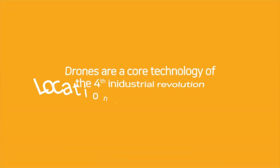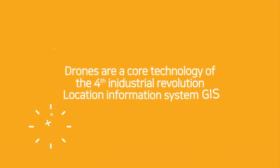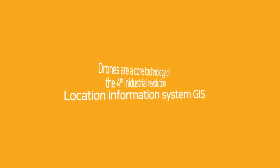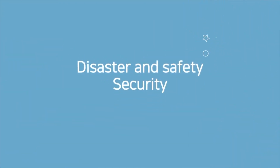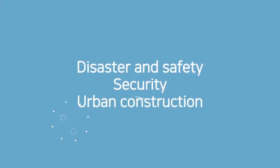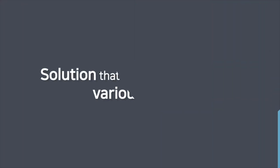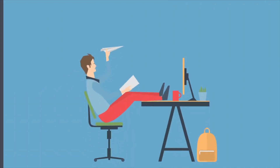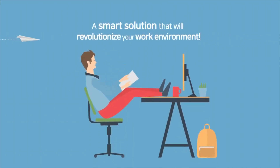Drones are a core technology of the fourth industrial revolution, and GIS is a location information system offering a solution that can be utilized across various fields such as disaster safety, security, and urban construction.